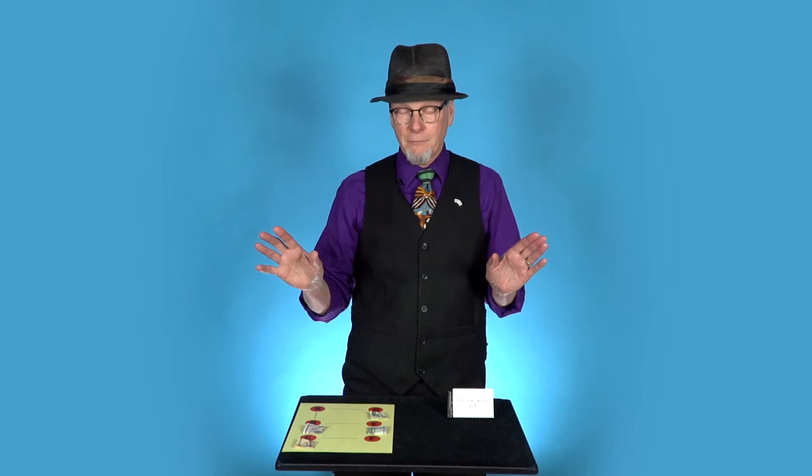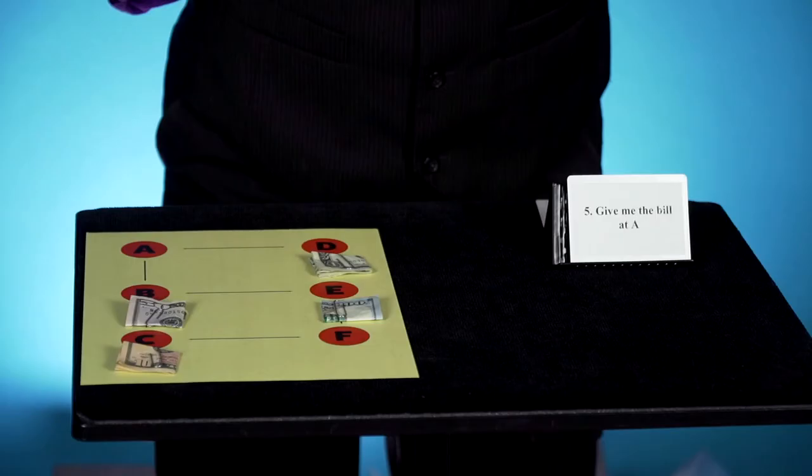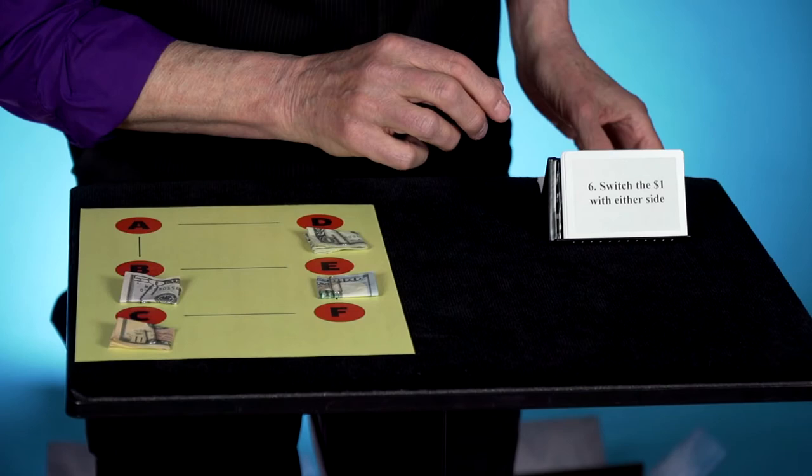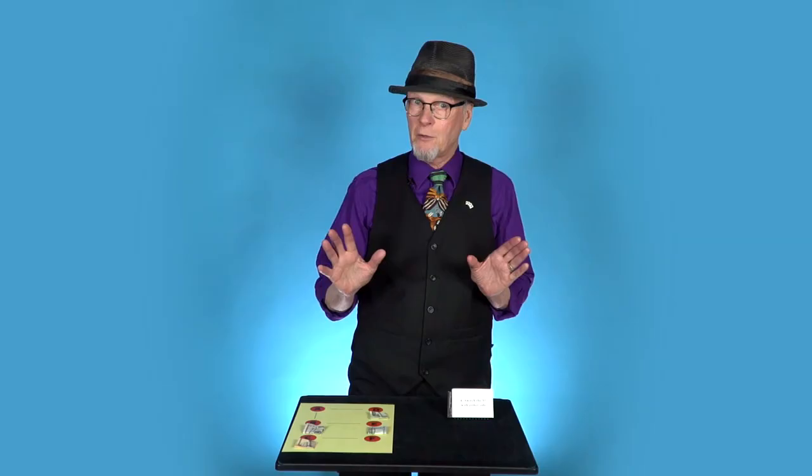Now, let's see if you lose any more money. Give me the bill at A. Luckily for you, it's only the $5 bill. Plenty of money still in play. You're a very lucky guy so far. 12 instructions. We're down to number six. Switch the 1 with either side again. Well, we can switch it back with the 10, returning the 10 to here.